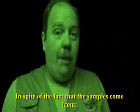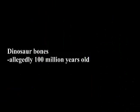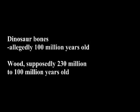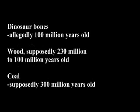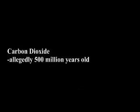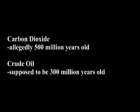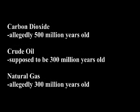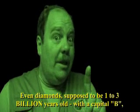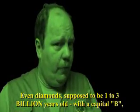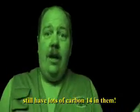This is true in spite of the fact that the samples come from dinosaur bones allegedly 100 million years old, wood fragments from 230 to 100 million years ago according to the alleged evolutionary age, coal allegedly 300 million years old, carbon dioxide allegedly 500 million years old, crude oil allegedly 300 million years old, natural gas allegedly 300 million years old, and even diamonds with an alleged age of 1 to 3 billion years old — all still have lots of carbon-14 in them.